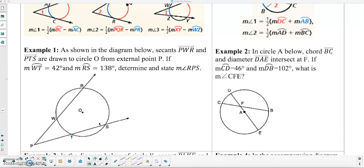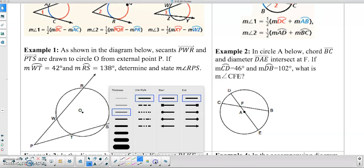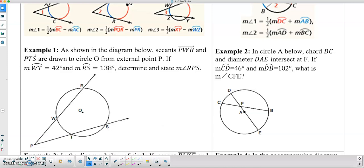As shown in the diagram below, secants PWR and PTS are drawn to circle O from external point P. If arc WT is 42 degrees, so as I'm reading it, I'm going to write this into my diagram, and the measure of arc RS is 138 degrees, we are looking for the external angle of RPS.